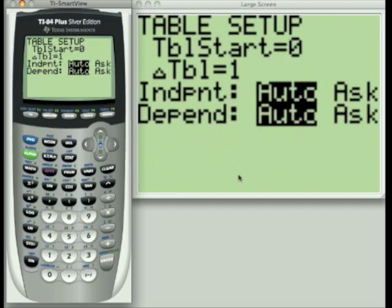Three settings that are useful on this screen are the table start, which is zero, and we've already seen the effect of that. The change in the table increments and what it counts up by, and it's set at one now. I pointed that out. And then the independent setting, which is set on auto right now. In a couple seconds, I'm going to show you the facts of what happens when we switch it to ask.